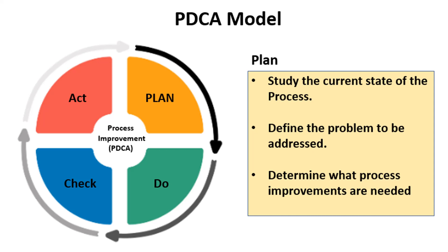From there, it involves determining what process improvements are needed. A plan is then created to define the specific actions, assignments, and resources needed to implement the identified improvements.